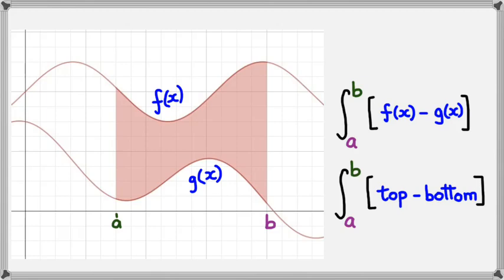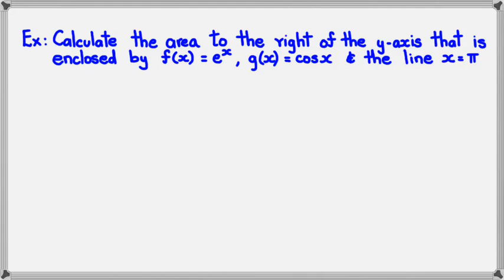Okay, that's basically the concept, guys. We're going to have a look at an example now. Here's the question: Calculate the area to the right of the y-axis that is enclosed by f of x, which is e to the x, g of x, which equals cos x, and the line x equals pi.